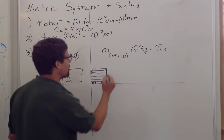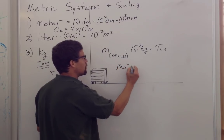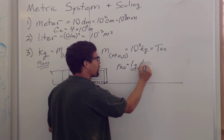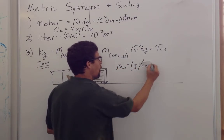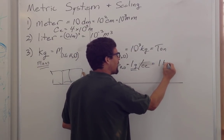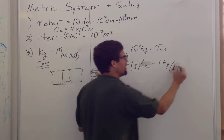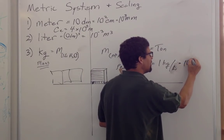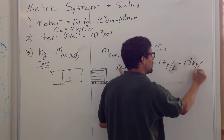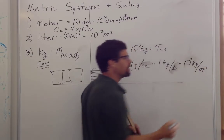And maybe you've heard the density of water is equal to 1 gram per cubic centimeter, or 1 kilogram per liter, or cubic decimeter, or 1 ton, 10 to the third kilograms per cubic meter.